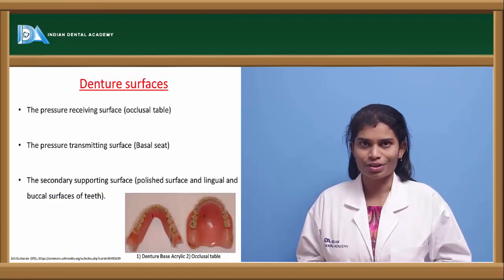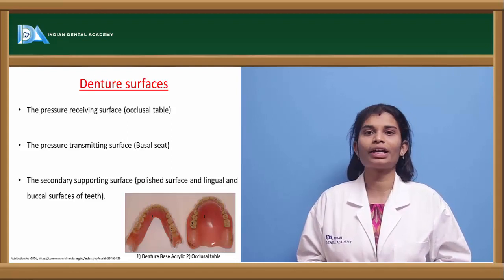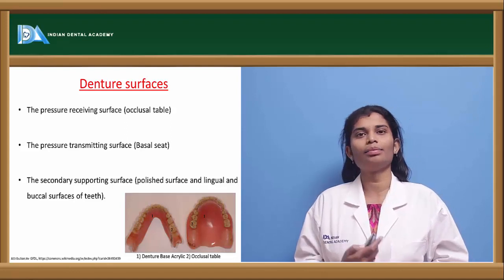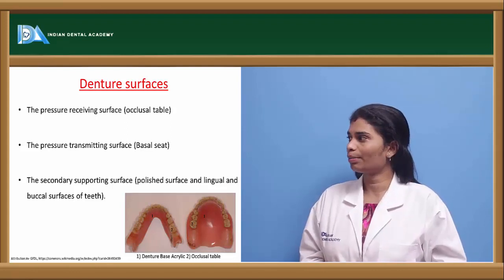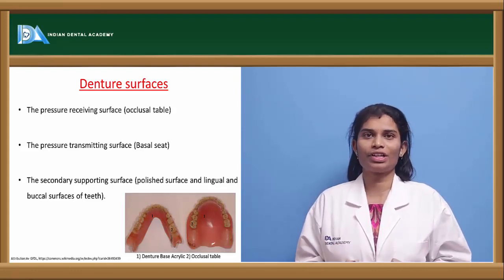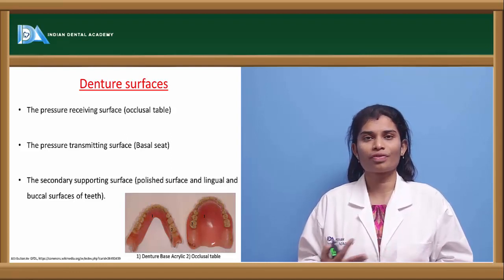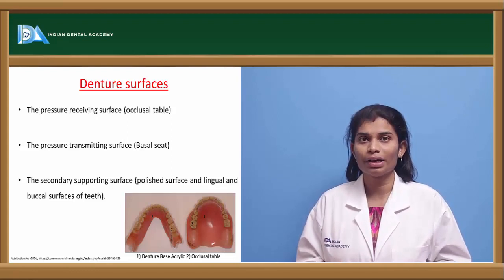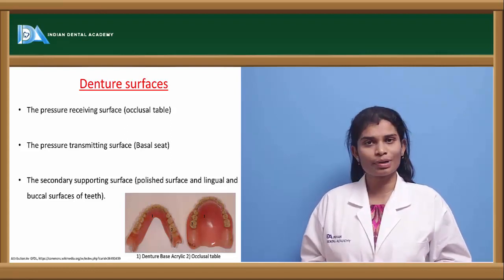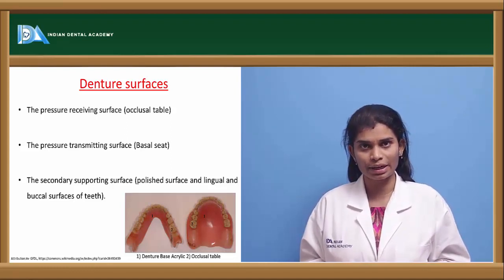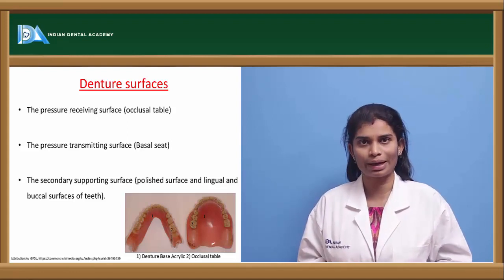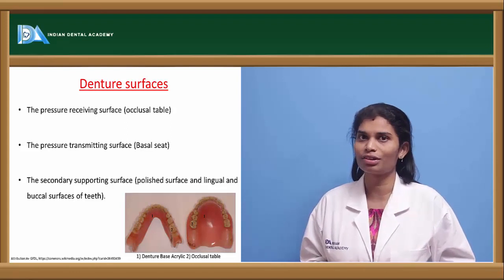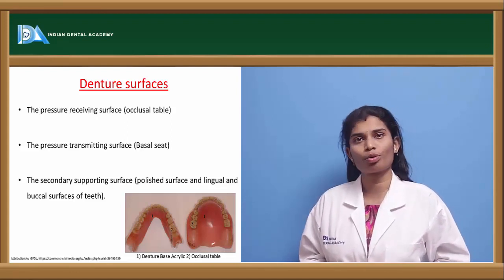Every denture has three surfaces: the occlusal table, the basal seat, and the polished surface. The occlusal table is the pressure-receiving surface where most grinding takes place and all forces are received. These forces are transmitted to the pressure-transmitting surface — the basal seat — which rests on the denture bearing area. The remaining area of the denture, including the polished and inclined surfaces, forms the secondary supporting surface.